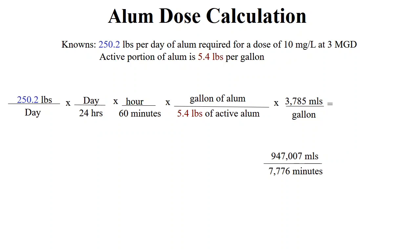We need to convert to milliliters per minute, which is a typical way of setting a chemical feed pump. In our calculation expression, we first write our goal of 250 pounds per day, then convert to minutes by multiplying by 24 hours per day and 60 minutes per hour. Next, we include that a gallon of alum has 5.4 pounds of aluminum sulfate. To convert from gallons to milliliters, we multiply by 3,785 milliliters per gallon.